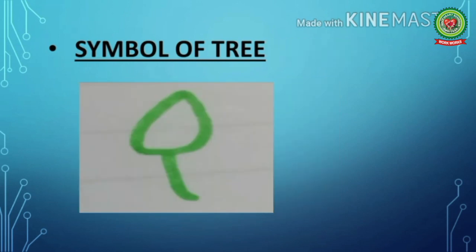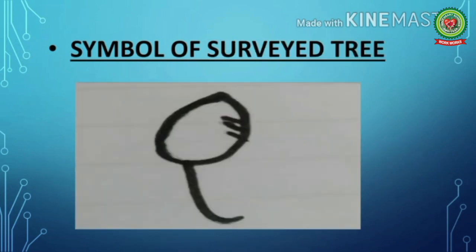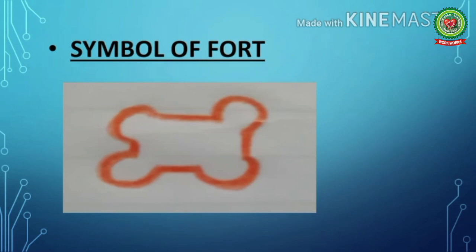Next conventional symbol is tree, depicted with green color on a map. Next we have survey tree — a tree inspected during a survey — shown with black color. Next is fort, which means killa, depicted with red color.